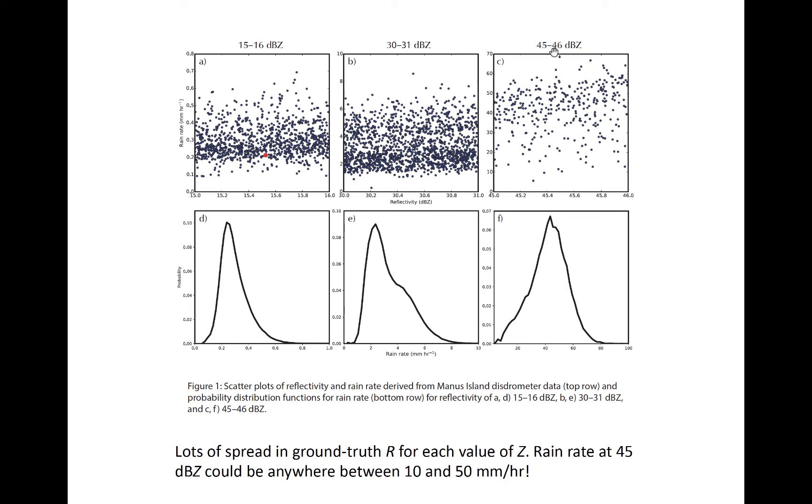Other spreads can also be seen in other 1 dB wide reflectivity bins. So here from 15 to 16 and here for much larger reflectivity, 45 to 46 dBZ.